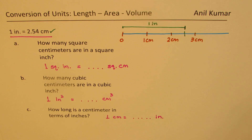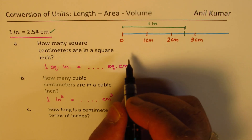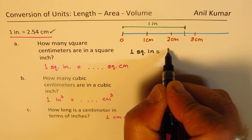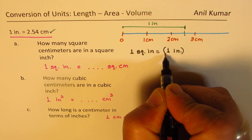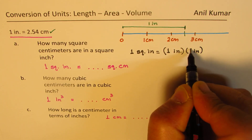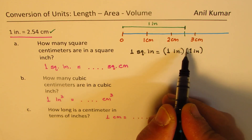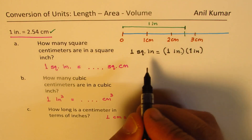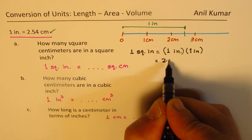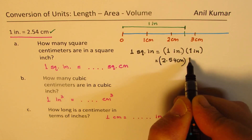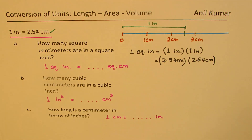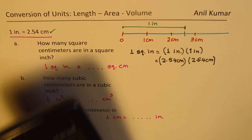Based on this, we are going to answer our question. How much is one square inch? One square inch means one inch times one inch — that is one square inch. Since we know each inch is 2.54 centimeters, we can write this as 2.54 centimeters times 2.54 centimeters.